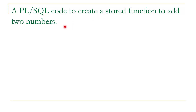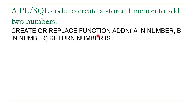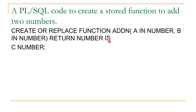As we have already discussed, the syntax to create a stored function is: create or replace function, followed by the name of the function. In this case the name of the function is 'add_n'. We are specifying two arguments: first argument is A, which is of IN type and its data type is NUMBER; second argument is B, which is again of IN type and data type NUMBER. Since we have to return the result of addition, which will be of NUMBER type, we declare return NUMBER and a local variable C of NUMBER type.